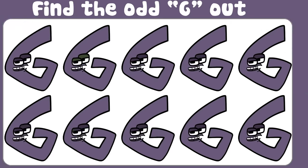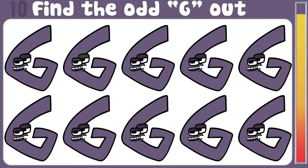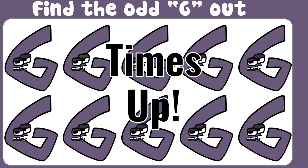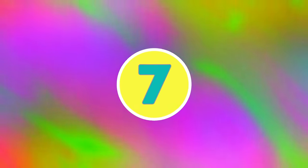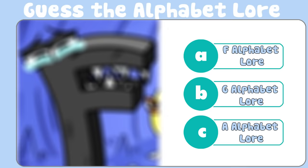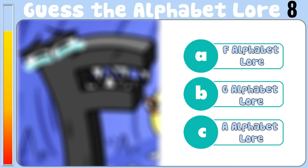Question 6. Look closely at the photo. Do you notice this strange thing? You have three options: A, B, and C.